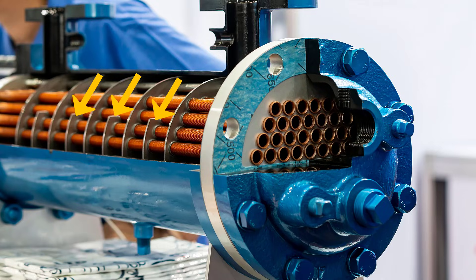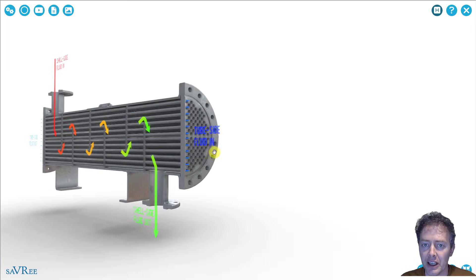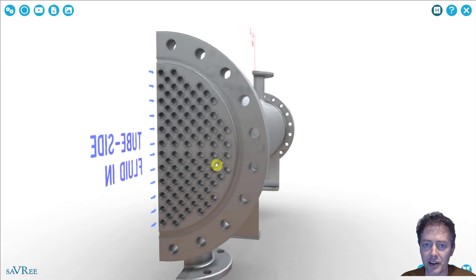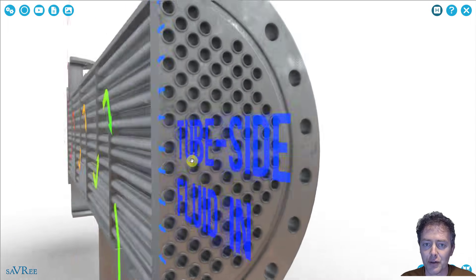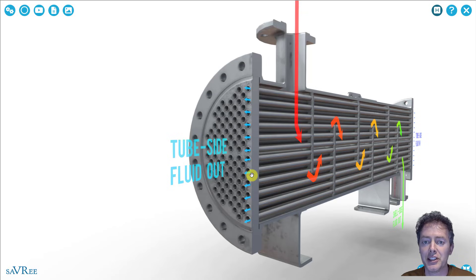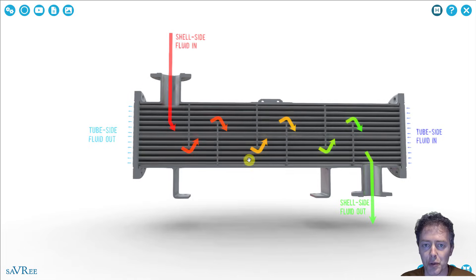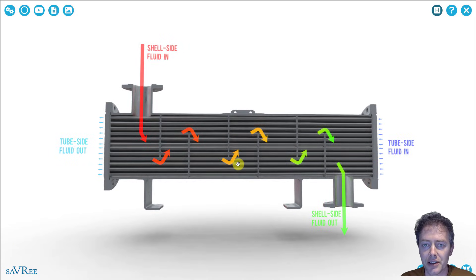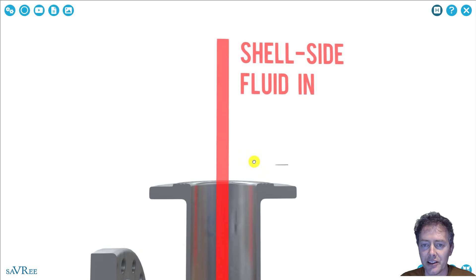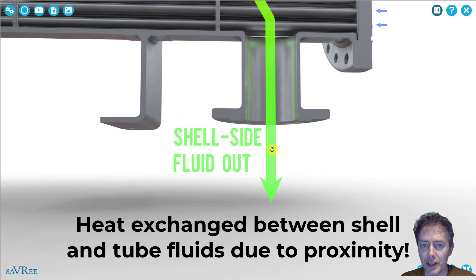This particular shell and tube heat exchanger is called a one-pass shell and tube heat exchanger, because the tube side fluid flows in through the tubes at one end and out of the tubes at the opposite end — it only passes through the heat exchanger once. We've used a red colour to indicate that the fluid is hot and it cools down to something like green on the other side.